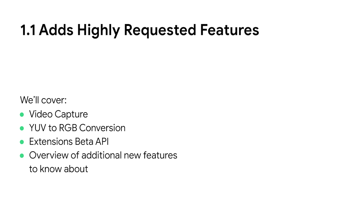Today, I'm going to talk about what's been added in 1.1. In particular, we'll focus on video capture, YUV to RGB conversion and rotation, and the extensions beta API. Finally, there will be a brief overview of some other new features to know about.